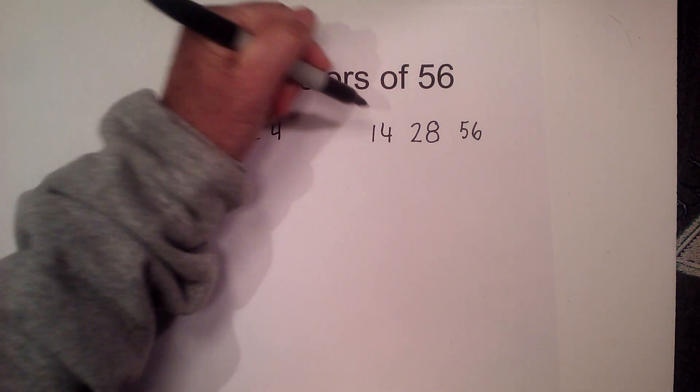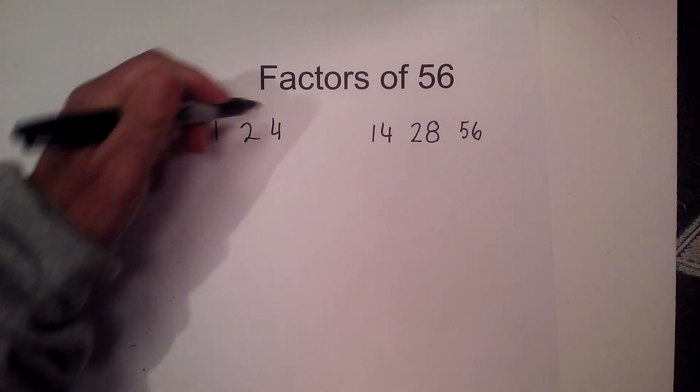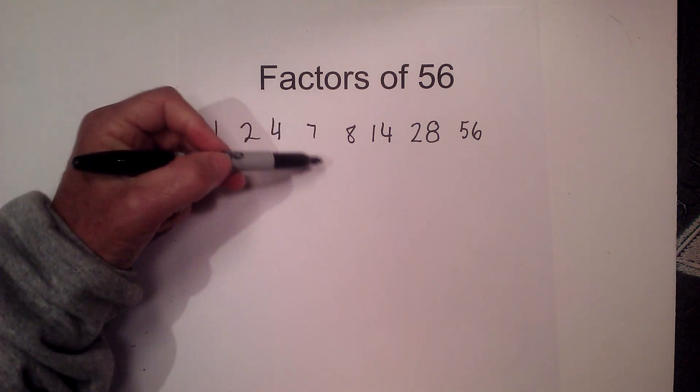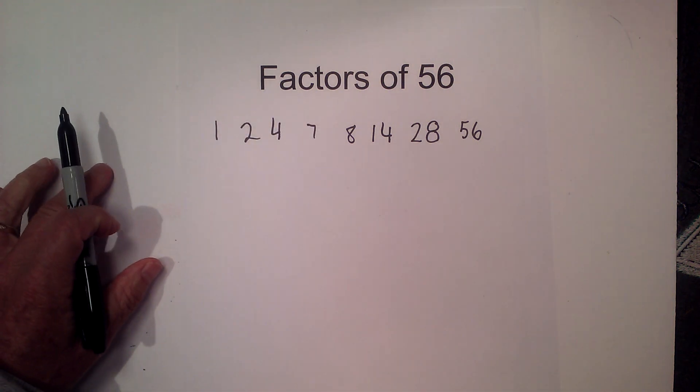14 times. And then 7 times 8. There are not any numbers between 7 and 8, so I'm finished with the factors of 56.